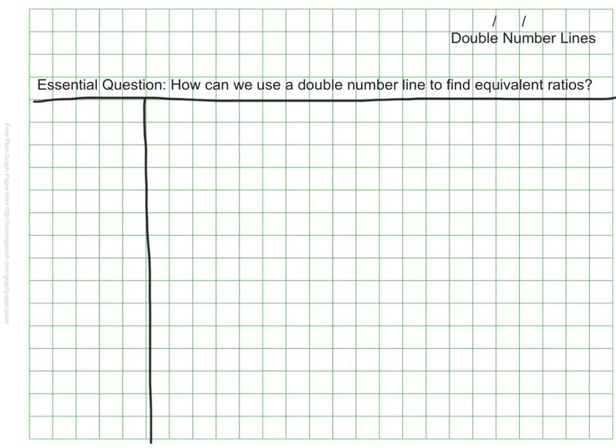The essential question for this video is how can we use a double number line to find equivalent ratios?